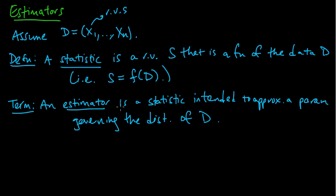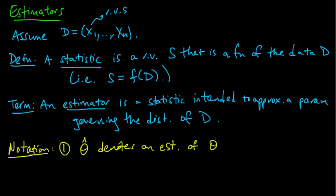A couple notational remarks. We often use theta hat or something hat to denote an estimator of a parameter theta. So whenever you see something hat, usually it's an estimator. Another notational remark is that we often write theta hat n to emphasize the dependence on n. So it's a function of x1 through xn, but n could vary.